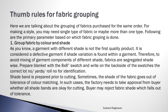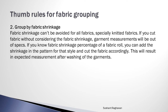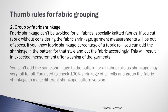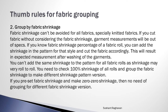Sometimes the shade of the fabric goes out of tolerance of color matching. In such cases, the factory needs to take approval from the buyer whether all shade bands are okay for cutting. The buyer may reject fabric shade which falls out of tolerance. Group by fabric shrinkage. Fabric shrinkage cannot be avoided for all fabrics, especially knitted fabrics. If you cut fabric without considering the fabric shrinkage, garment measurements will be out of specs. If you know the fabric shrinkage percentage of a fabric roll, you can add the shrinkage in the pattern for that style and cut the fabric accordingly, resulting in expected measurements after washing. You need to check 100% shrinkage of all rolls and group the fabric shrinkage to make different shrinkage pattern versions. If you preset fabric shrinkage and make zero shrinkage, then no need for grouping for different fabric shrinkage versions.